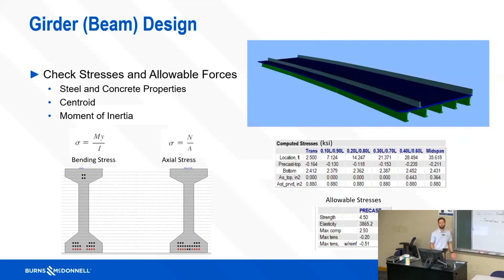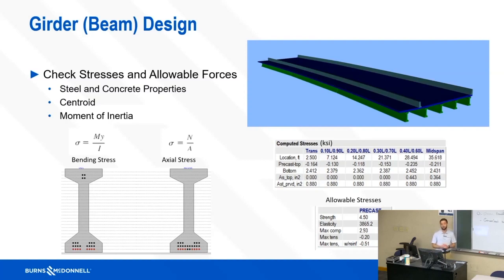We also look at allowable stresses and allowable forces. From a prestressed girder design I worked on, the AASHTO code gives you different allowable stresses for different scenarios — maximum compression stress and maximum tensile stress. You calculate your stresses just like in class, compare them to make sure you fall under the allowable, and try to optimize your design for efficient use of materials.